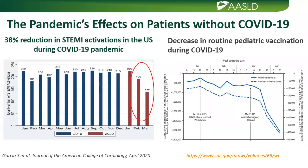In the U.S., there has been a 38% reduction in activation of the cath lab for ST-segment MI, per data just published in the American College of Cardiology from nine major centers. This points to the fact that patients need reassurance that with symptoms of an emergency, they need to come to the hospital. Preventive healthcare has also seen decline, especially in vaccination, per updated CDC data.